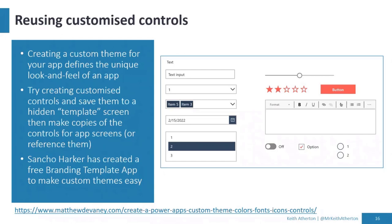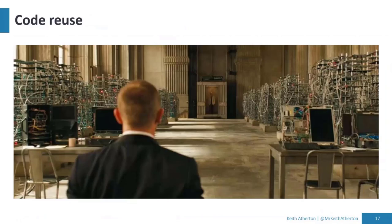Another good approach for UI is reusing customized controls. Many of us know the out-of-the-box controls in Power Apps — we know them, we love them — but often we might want extra branding: our organization's colors, a certain look and feel, certain font families or font sizes for accessibility. Instead of using out-of-the-box controls on screens again and again, there's a great article on Matthew Devaney's blog about the concept of a hidden template screen. This is a screen the user won't see, but you can get the out-of-the-box controls, make all your customizations, and when you create user-visible screens, you can copy and paste or refer to these template controls. Sancho Harker has also created a free branding template app along these lines to help you get started.